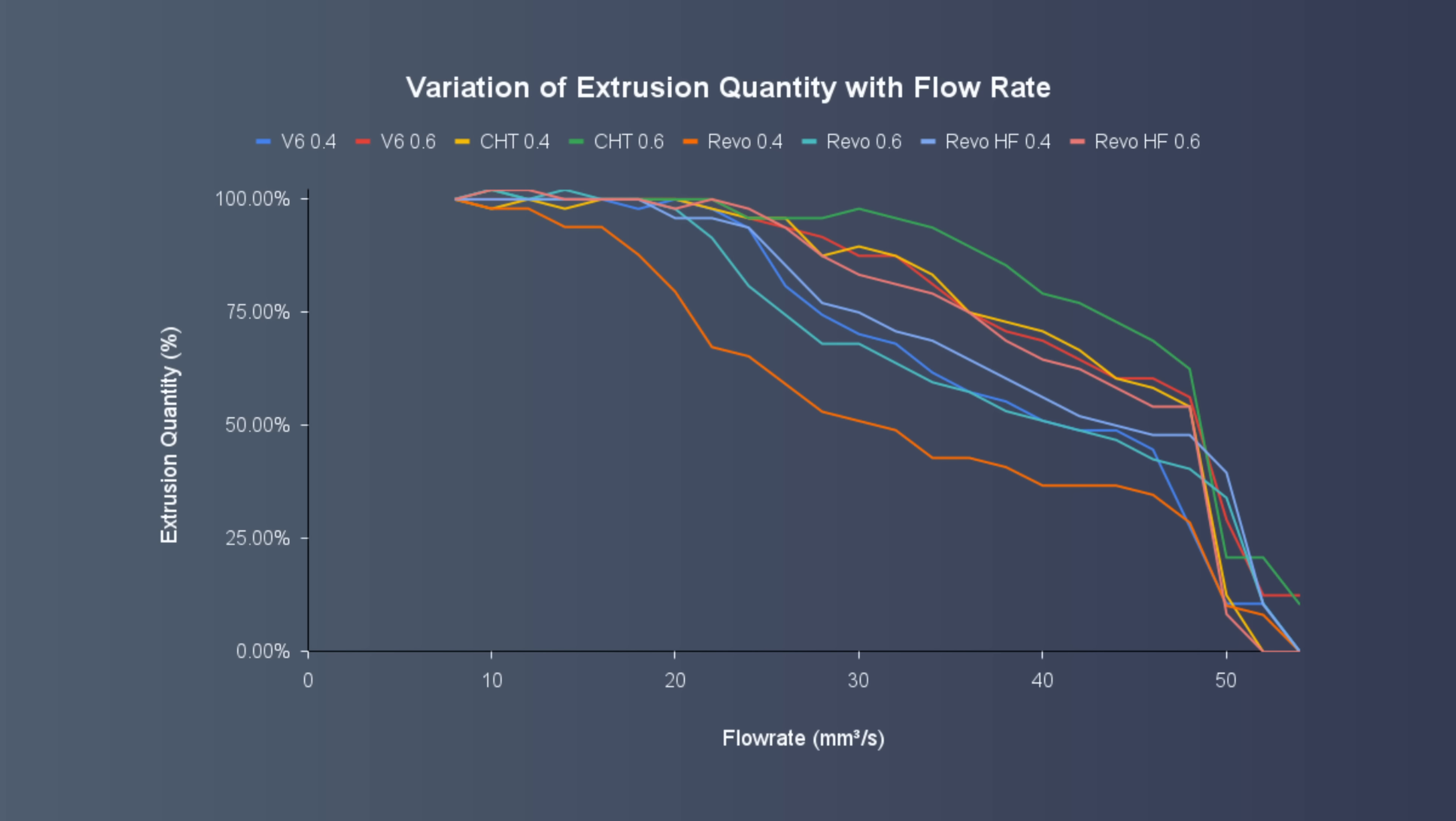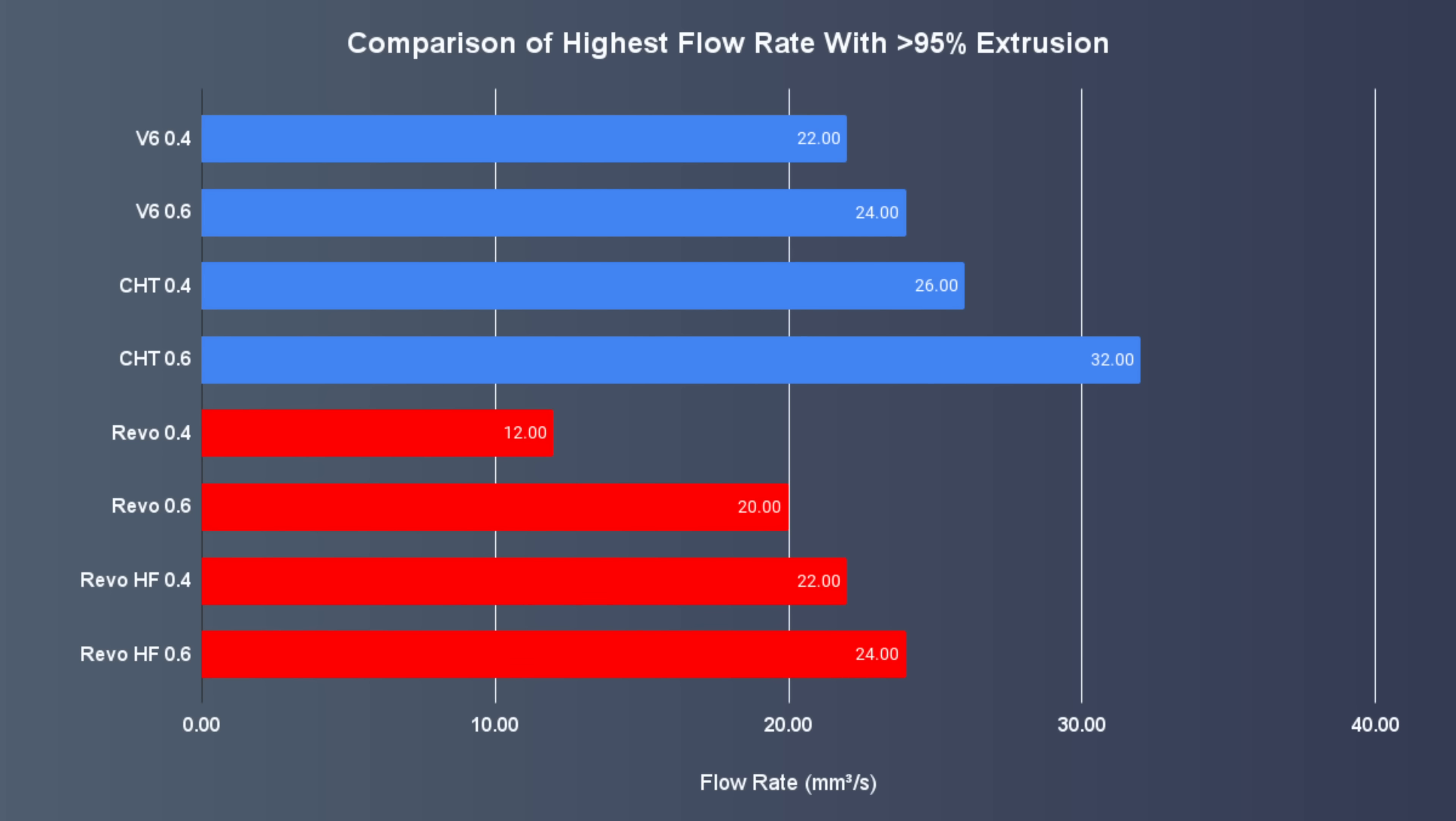To compare all nozzles throwing them on a graph isn't particularly helpful, it's just a kind of rainbow mess, so instead I'm going to use a uniform benchmark by inspecting their fastest flow rate while staying above 95% extrusion. The Rapido results are in blue and the Revo are in red.